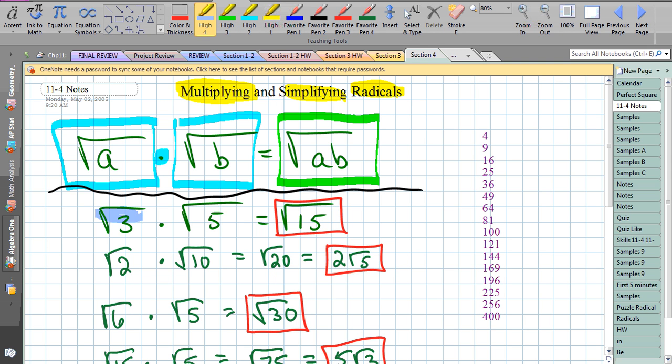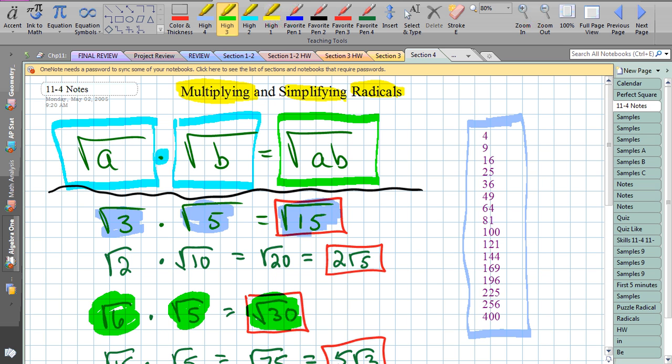So here's some quick examples. Radical 3 times radical 5 is radical 15. And I would like to try to simplify radical 15, but radical 15 doesn't have any factors on the list. Let's do the third one down. Radical 6 times radical 5 is radical 30. And notice when I try to break down 30, none of those factors are on the list.